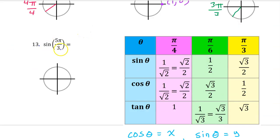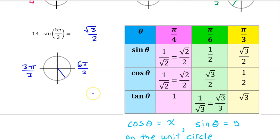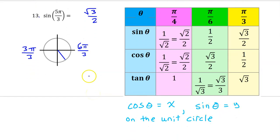For number 13, the sine of 5 pi over 3 will be the same as the sine of pi over 3, which is radical 3 over 2 — except it might be negative depending on the quadrant. Pi is 3 pi over 3, and 2 pi is 6 pi over 3. So 5 pi over 3 is one multiple before 6 pi over 3, putting it in the fourth quadrant. Sine is the y value, and y values are negative in the fourth quadrant, so the answer is negative radical 3 over 2.